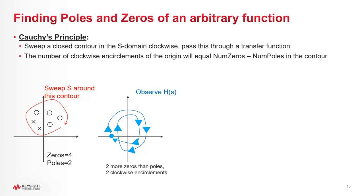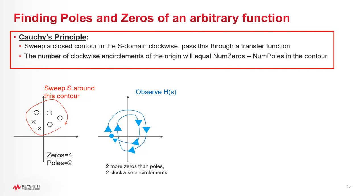Well, you can use something called Cauchy's Principle, the derivation of which is beyond this video. But basically, what it says is, if you sweep a closed contour in the s domain, and you pass this as the input to your transfer function, then at the output, you can figure out the difference between zeros and poles inside that contour by observing the number of times that the output encircles the origin clockwise.